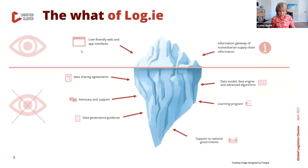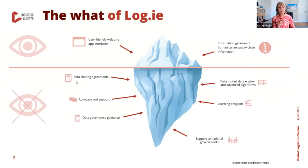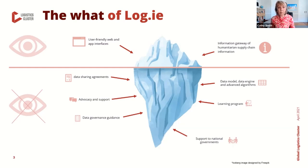You can imagine LoCate as an iceberg. What you see at the tip are user-friendly web interfaces, applications, and surveys that act as an information gateway for the humanitarian supply chain. But what you don't see — what's underwater — is what really makes LoCate special and sustainable. We support partners to share information using data sharing agreements and consents, and we spent more than two years developing a data model that makes LoCate compatible with most humanitarian logistics information platforms currently in use.